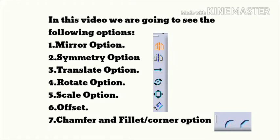The symmetry option is when you draw a line or any object, that line will be translated to the other position and the first image will be removed. The third one is the translate option — as the name suggests, you have to just translate one part to another position.